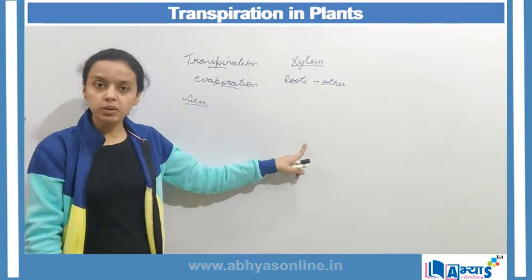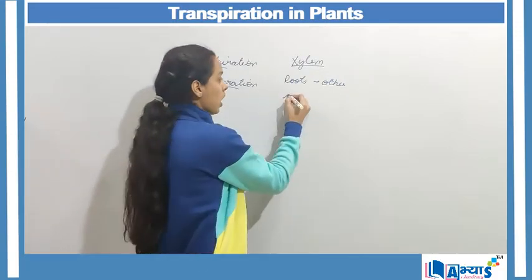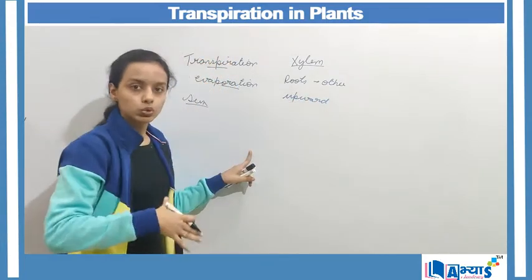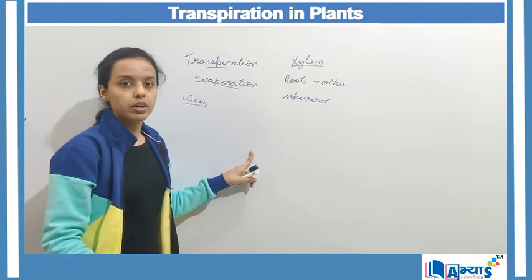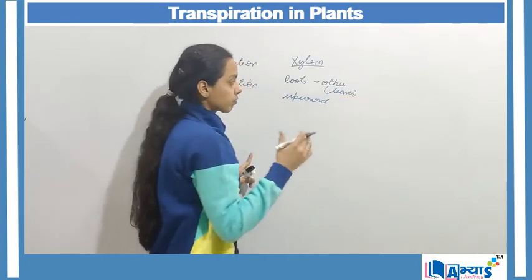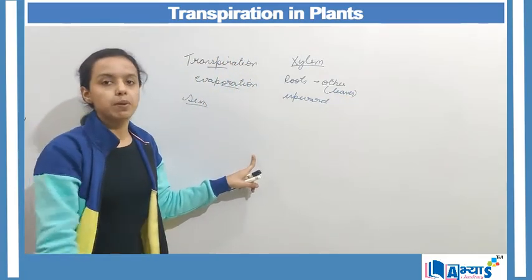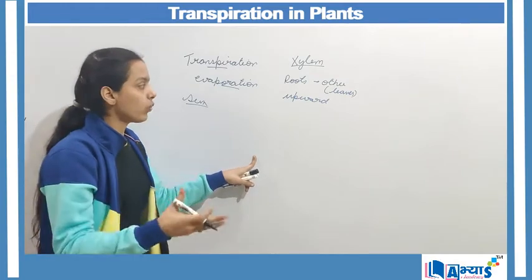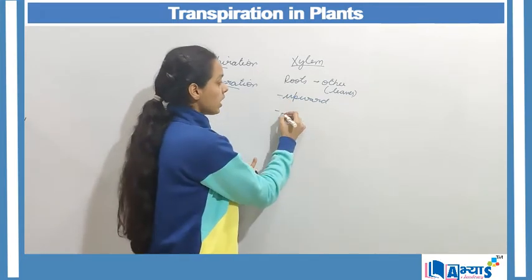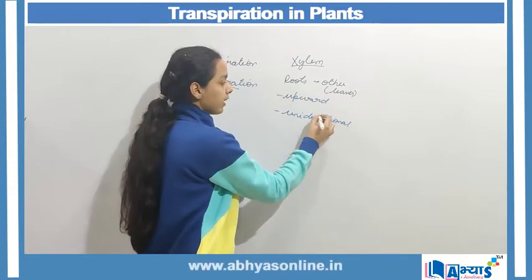The xylem vascular tissue transports water and minerals from the roots to the other parts of the plant in an upward direction. This upward movement of water and minerals goes from the roots to other parts of the plant body, particularly the leaves, because leaves require water to prepare food through photosynthesis. This movement is unidirectional — only upward.